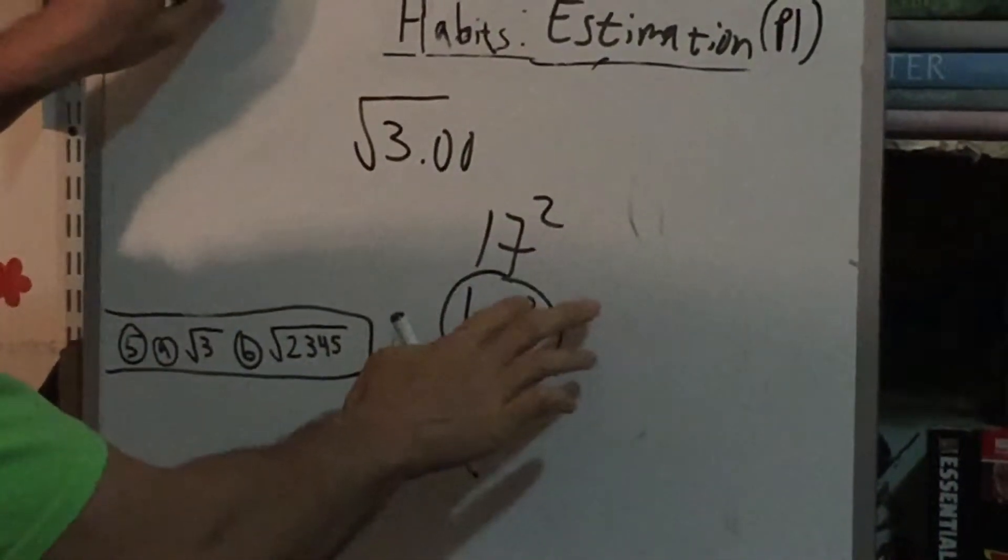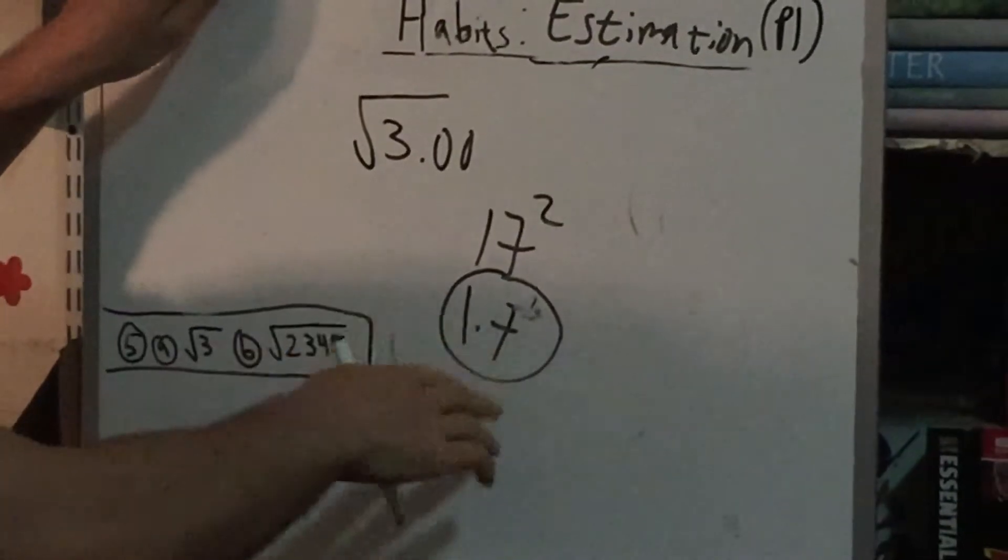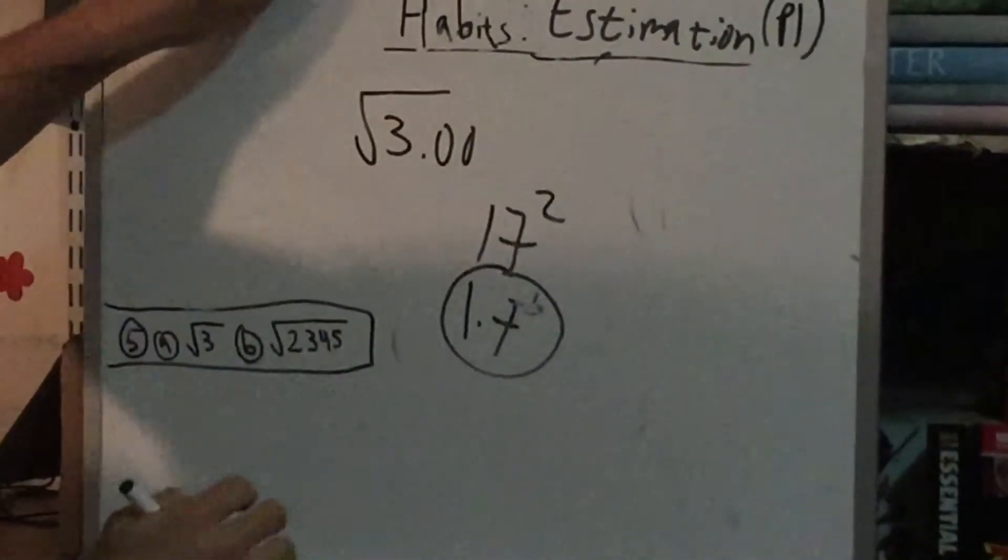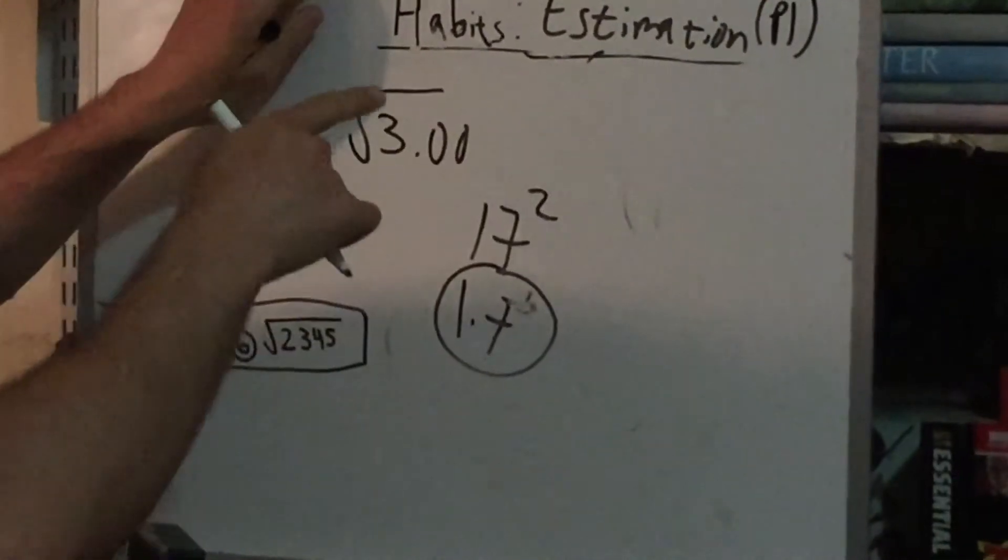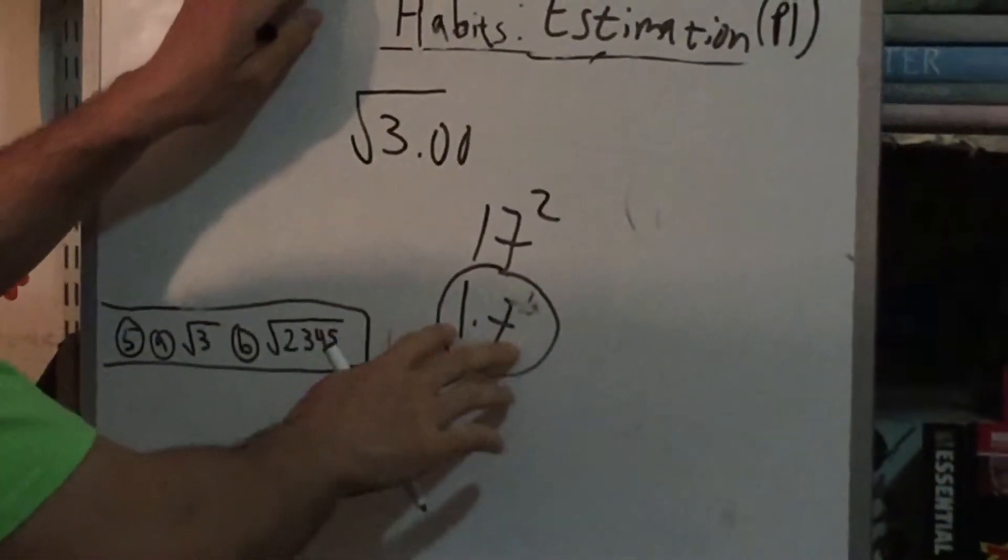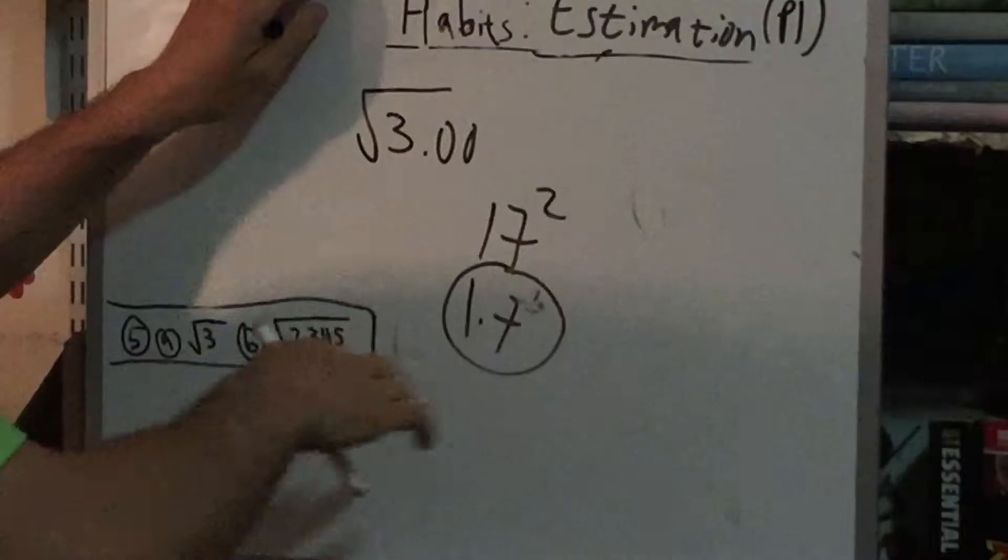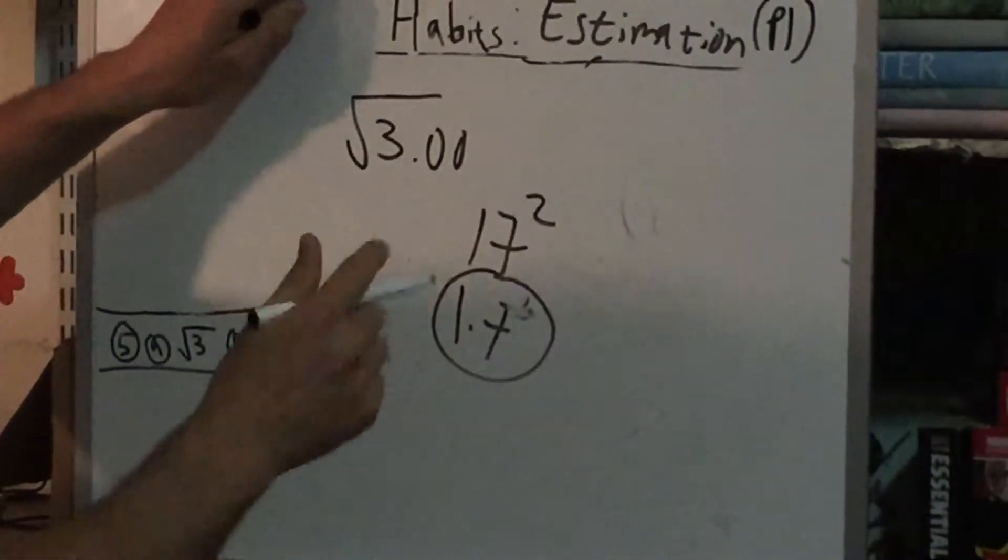Sorry, this is pretty close to 1.7, and 1.7 squared is 3. So the point is, without even trying 1.5 like in the previous idea, we got very close much faster just by knowing some of our perfect squares.